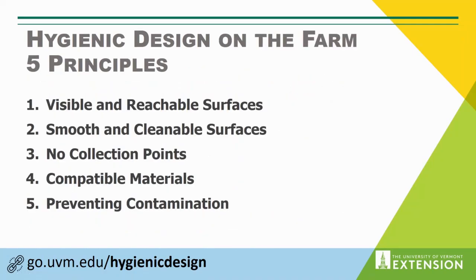At the heart of hygienic design for produce farms are these five principles. This is a summary or a simplified group of principles that come from a larger wealth of knowledge around hygienic design that's been really developed for food manufacturing facilities and food plants. What we've worked to do is boil this down to five principles we can all carry around on a daily basis and really use as a different or a new lens for looking at wash pack areas and pack sheds to improve the cleanability of these spaces and the overall hygiene.